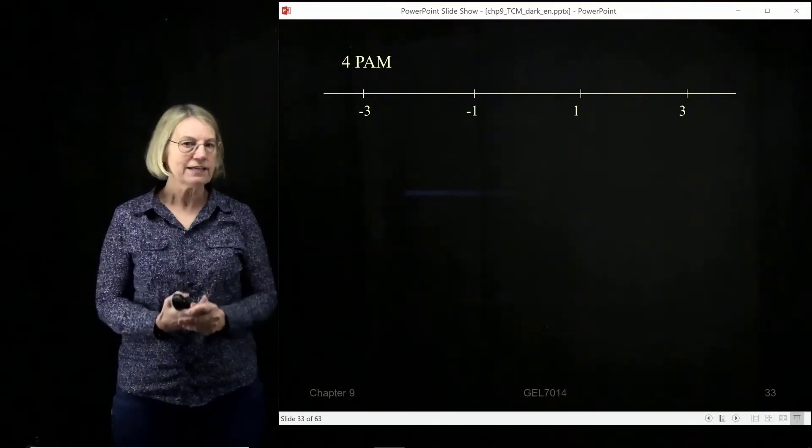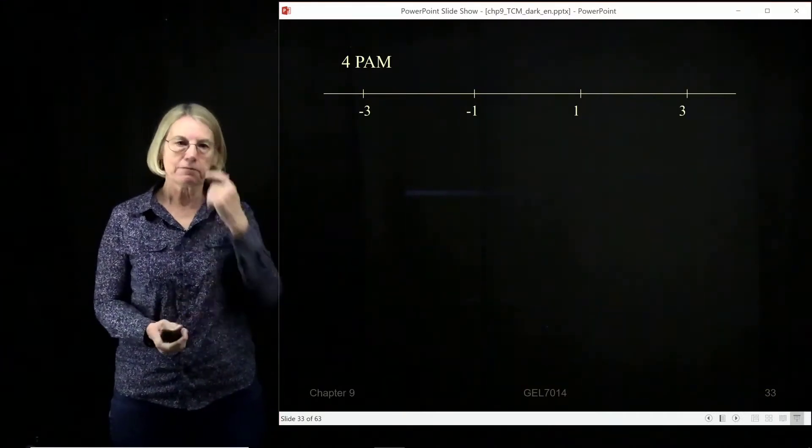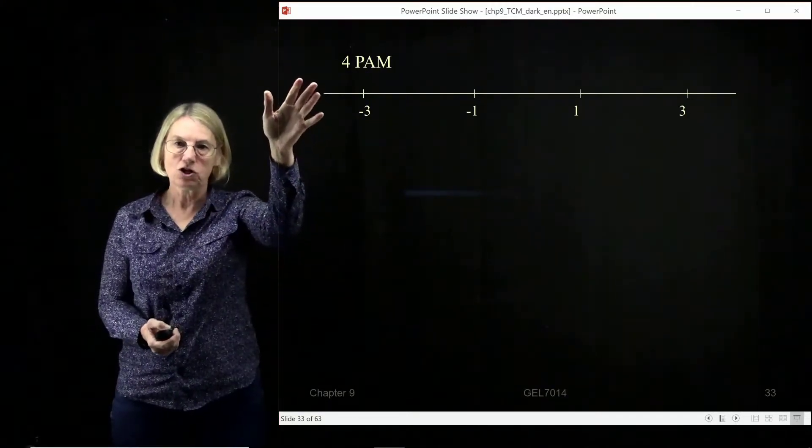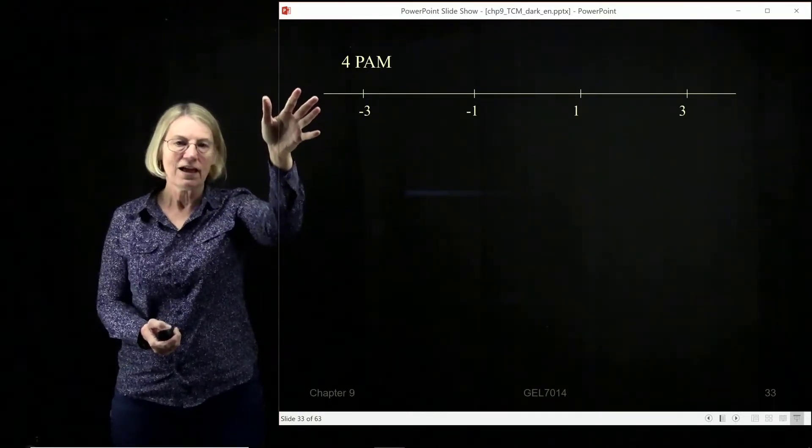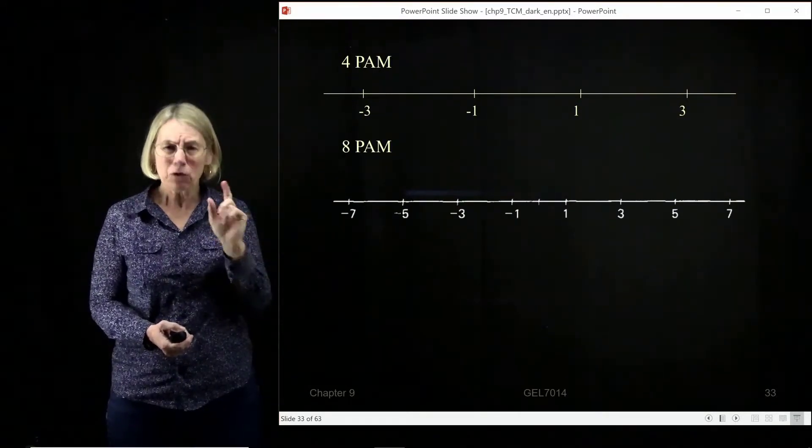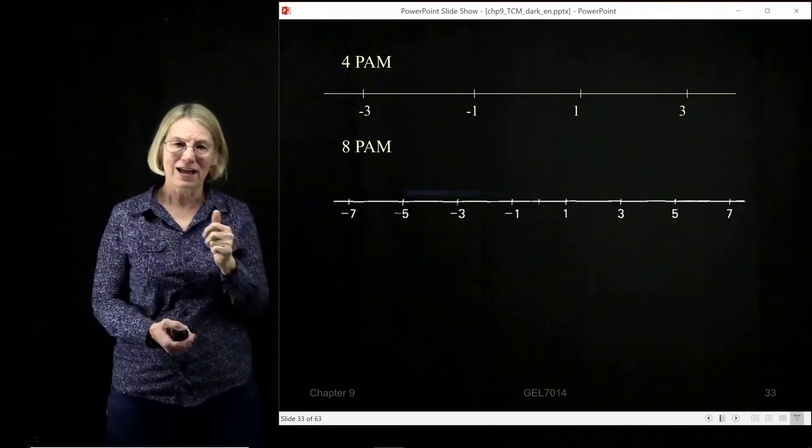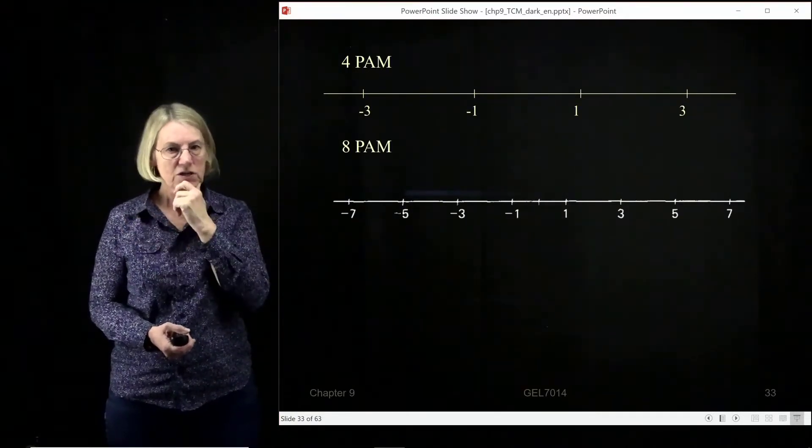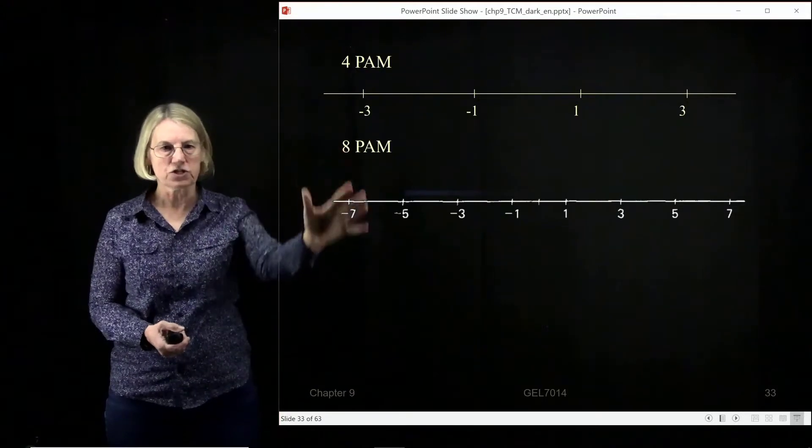So to calculate the minimum distance, I'm going to consider what was happening with no coding and what happens when I go to coding it. And if I'm going to do that comparison, I really should go to signal space and put all of this in terms of ES.